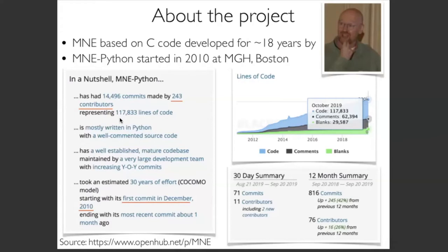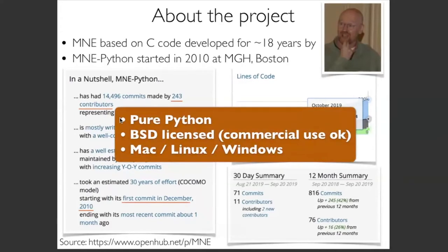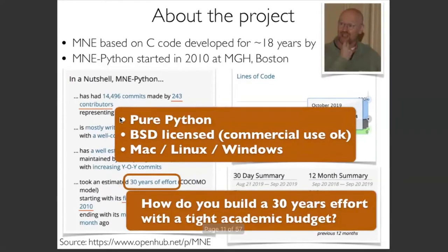The question I want to answer is: how do you write such a software? MNE Python is pure Python, BSD licensed — meaning it can be used commercially, and startups are actually using it in their products. I have grants and contracts in France thanks to MNE collaborations with companies. It's available on all standard operating systems. So how do you make software that would take 30 years to develop in nine years with limited funding?